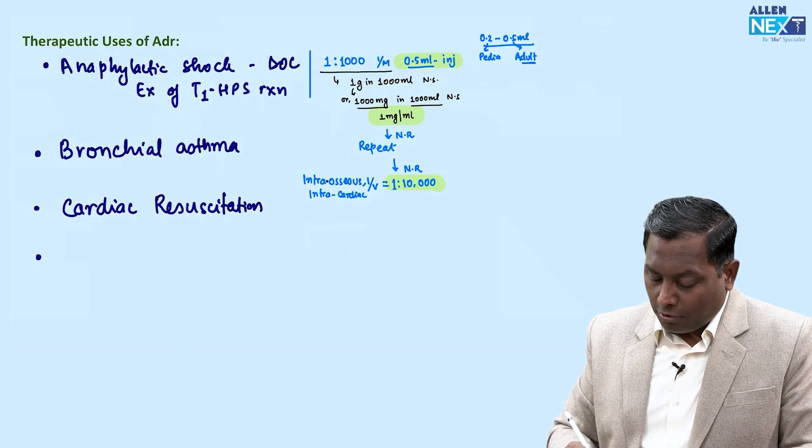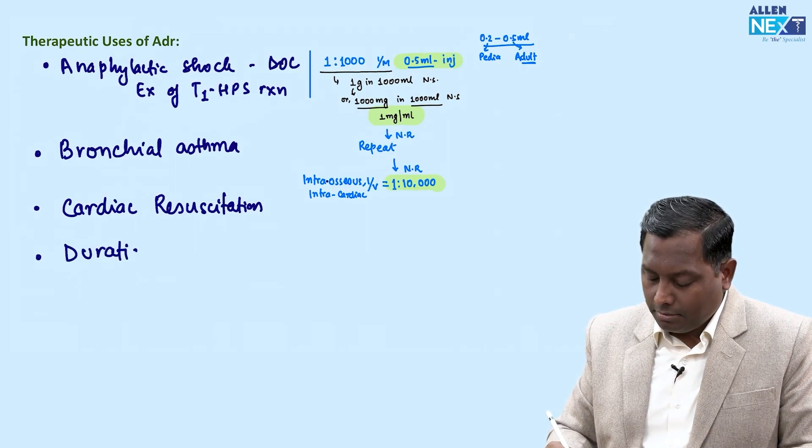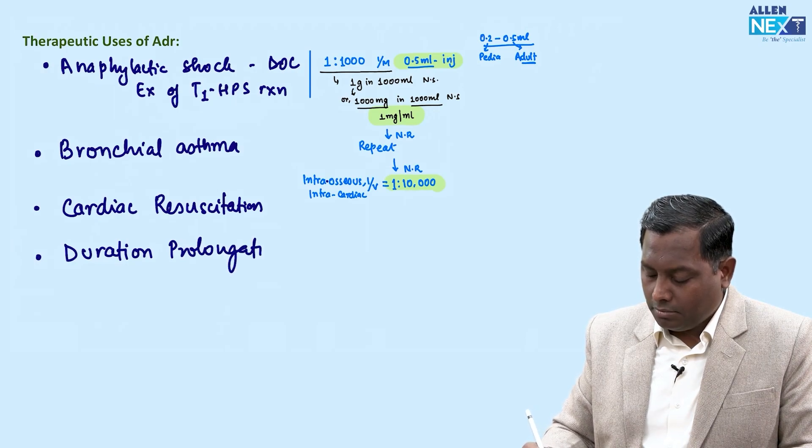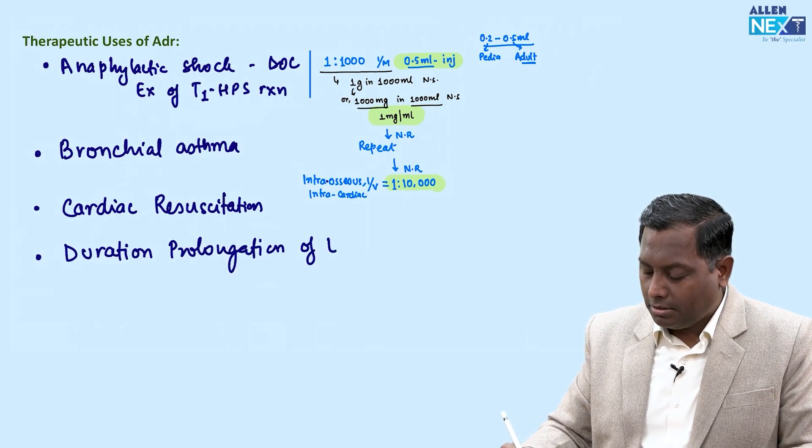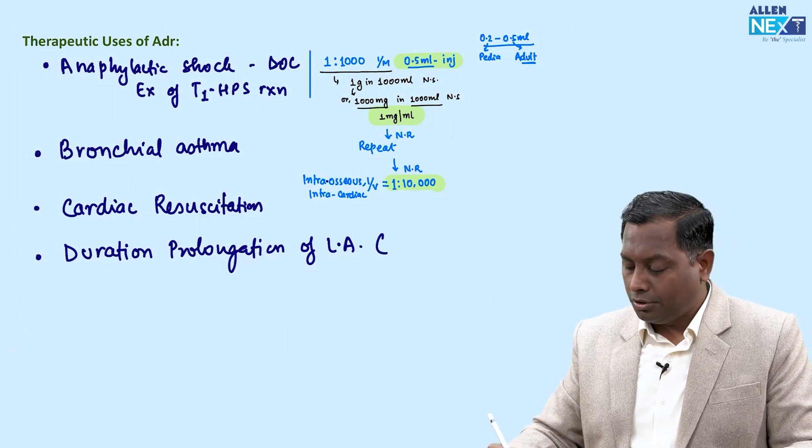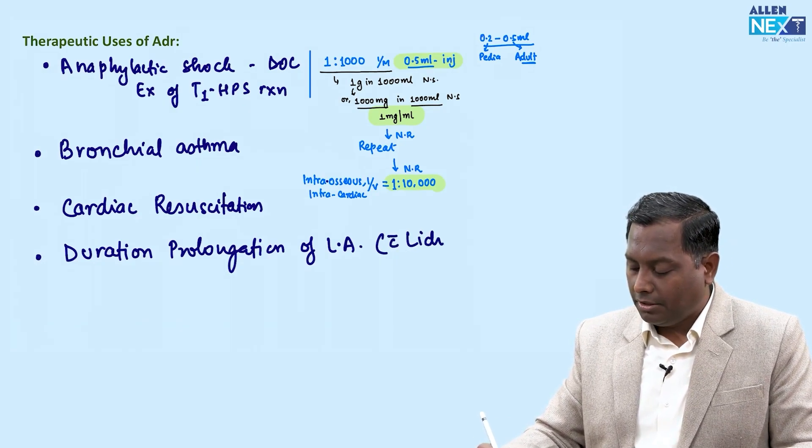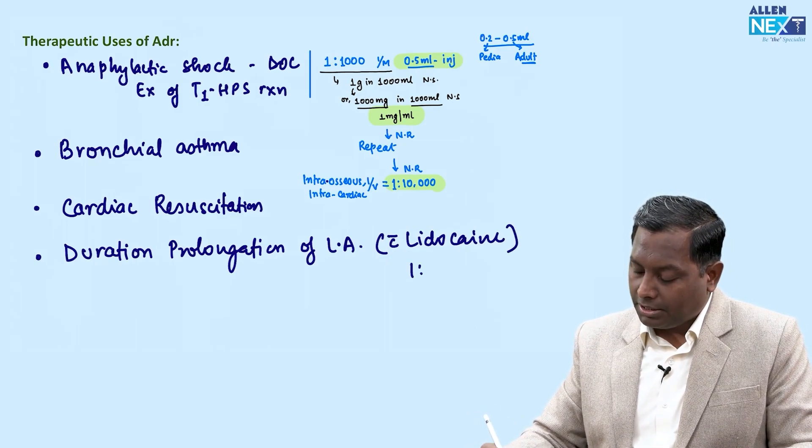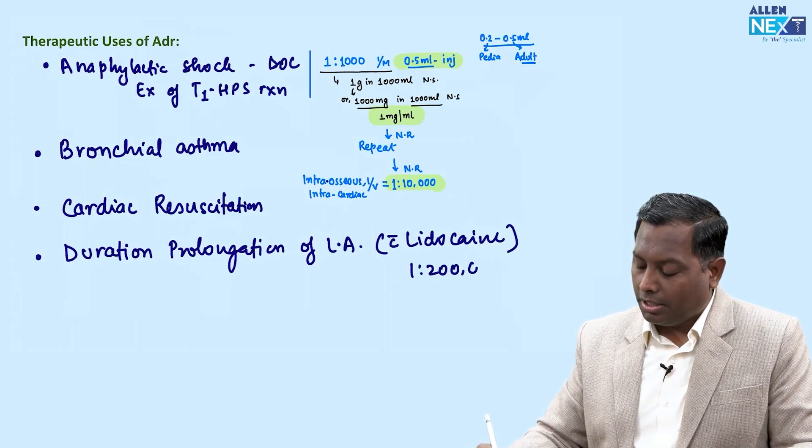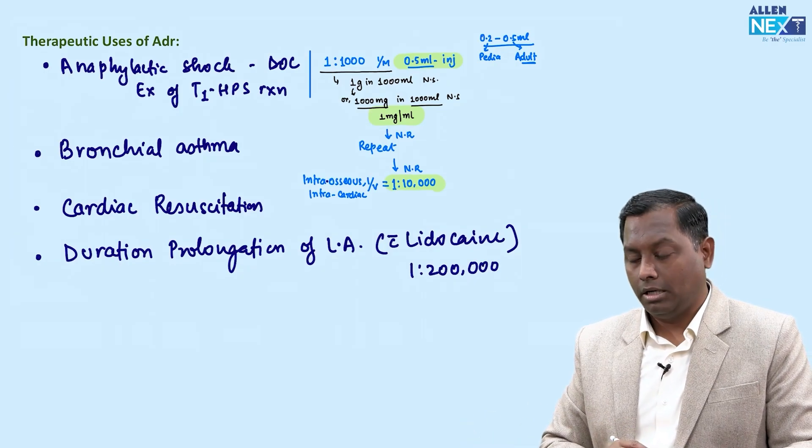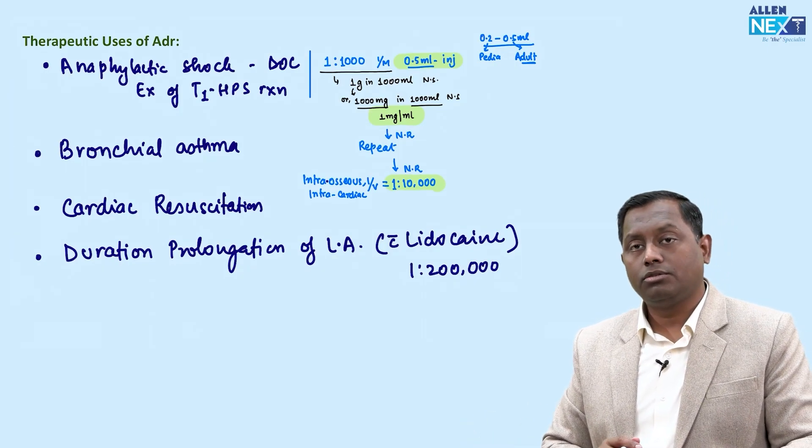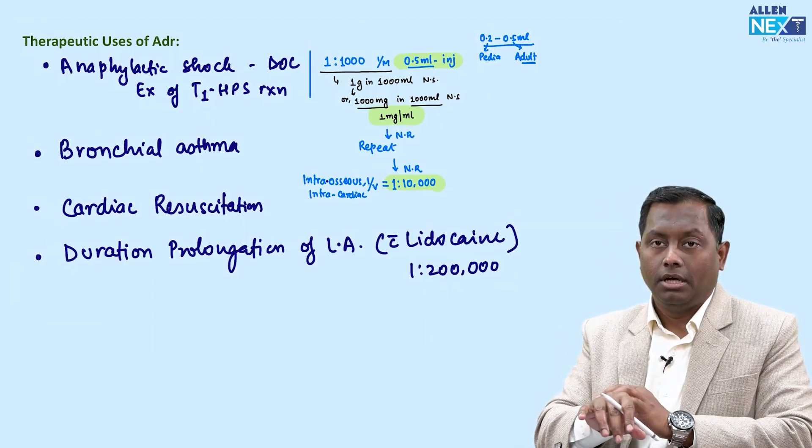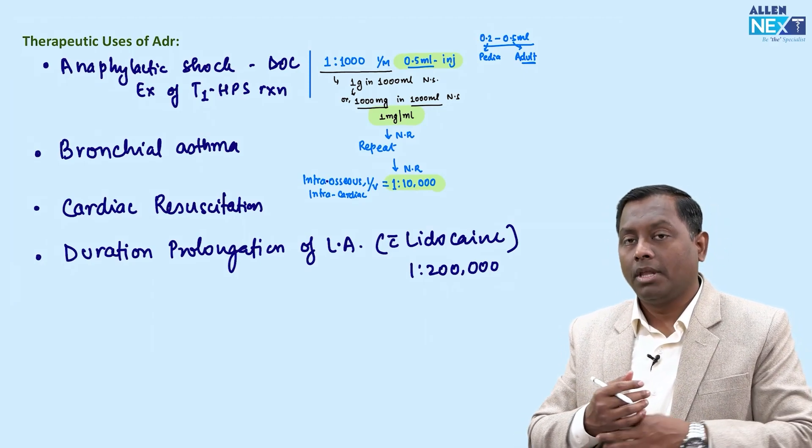We can use it for cardiac resuscitation and for duration prolongation of local anesthetics. Usually with lidocaine, we can use the concentration 1:200,000. With lidocaine, we can use 1:200,000.